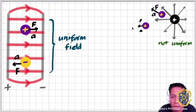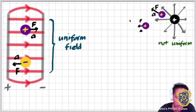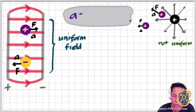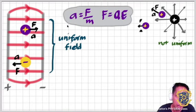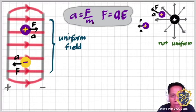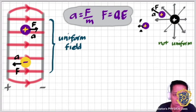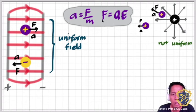Every time there's a difference in distance, there's a change in acceleration, so what you can calculate is an instantaneous acceleration. You can still use Newton's second law: acceleration equals force divided by mass. From our previous work, the electric force equals the charge multiplied by the electric field: F = qE.